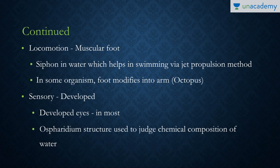Regarding locomotion, they have a muscular foot in most species. Some may also have a siphon in water which helps via jet propulsion — the siphon expels water and the organism moves in the opposite direction, as seen in squids. In some organisms like the octopus, the foot is modified into arms. The sensory system is well developed and most have a developed eye.